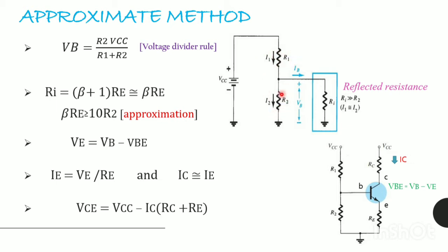If I1 is equal to I2, then R1 and R2 can be considered as series elements. The voltage across R2, that is our base voltage VB, is determined by the voltage divider rule. So VB equals R2 into VCC by R1 plus R2. The reflected resistance, beta plus 1 into RE, is approximated to beta RE. By approximation condition, beta RE is greater than or equal to 10 R2. If beta times RE is at least 10 times R2, then our approximation can be applied with a high degree of accuracy.